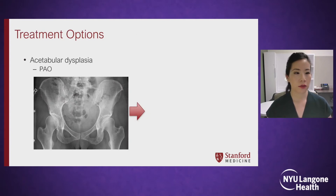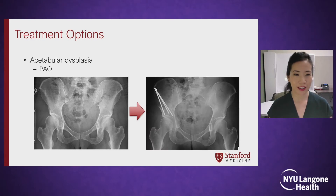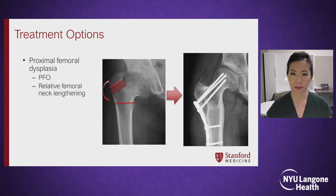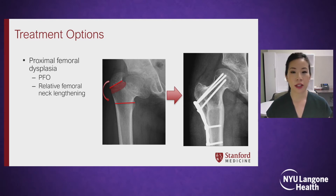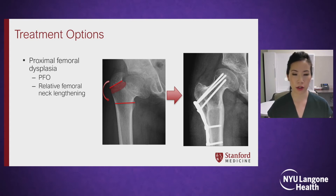The treatment for acetabular dysplasia in the skeletally mature is a periacetabular osteotomy, and it's a very powerful surgery to correct acetabular dysplasia. For proximal femoral dysplasia, a proximal femoral osteotomy is sometimes needed to correct varus or valgus deformity and rotational deformities. Relative femoral neck lengthening can also correct a high-riding greater trochanter and any impingement secondary to that.